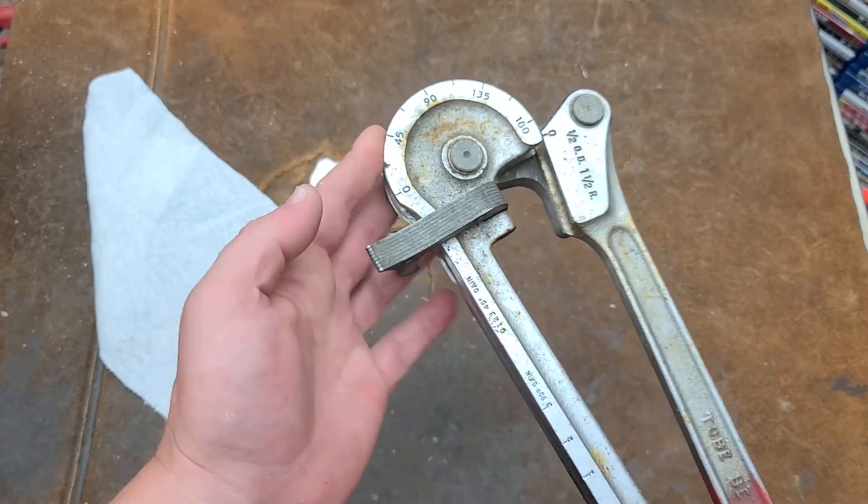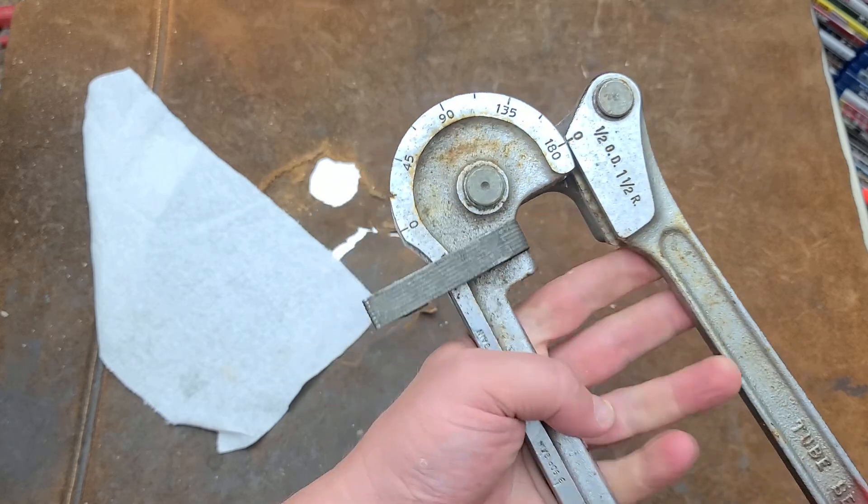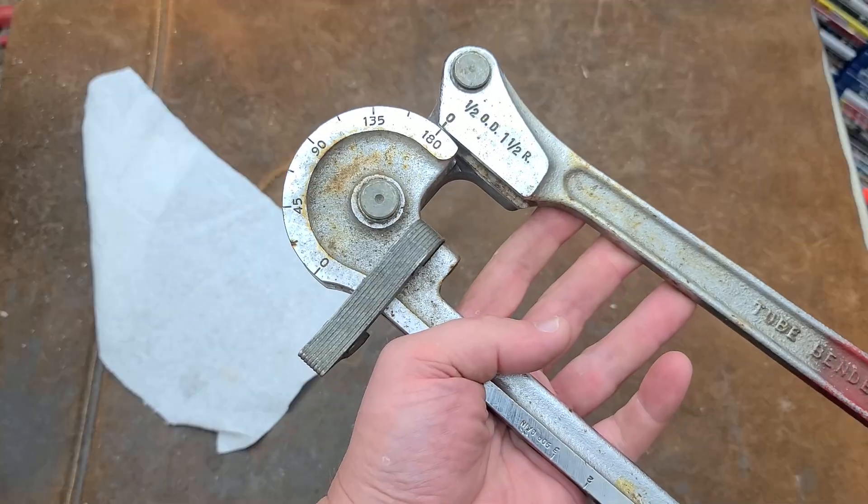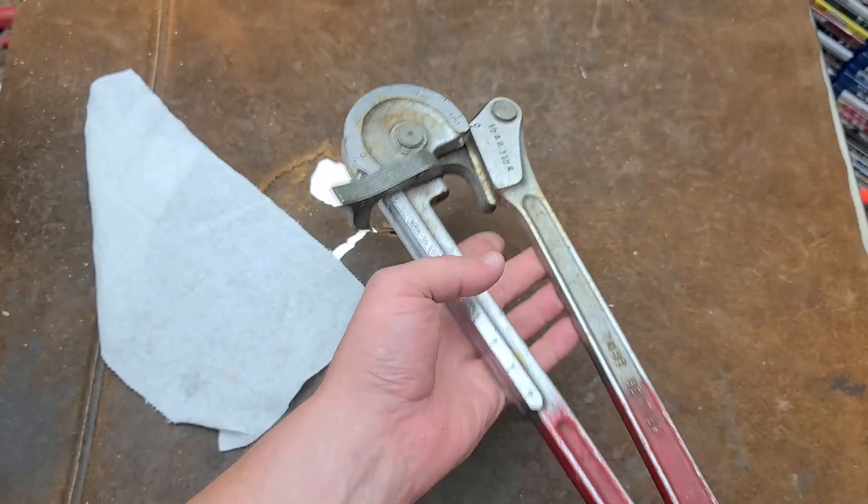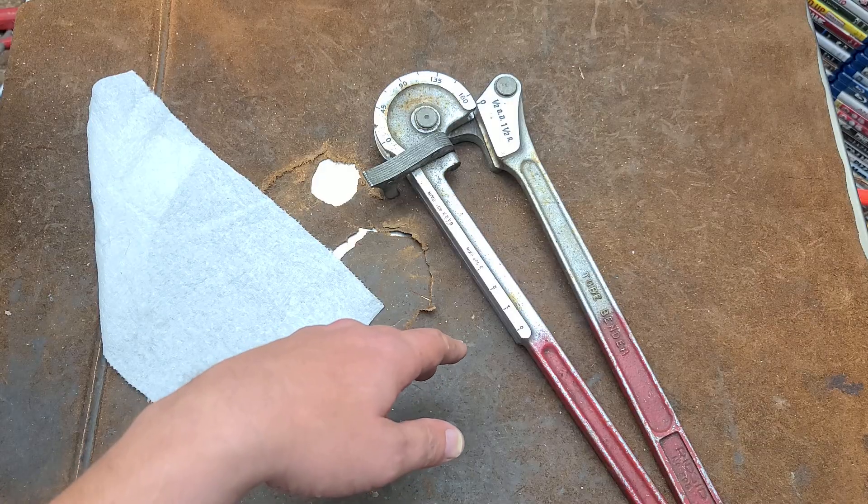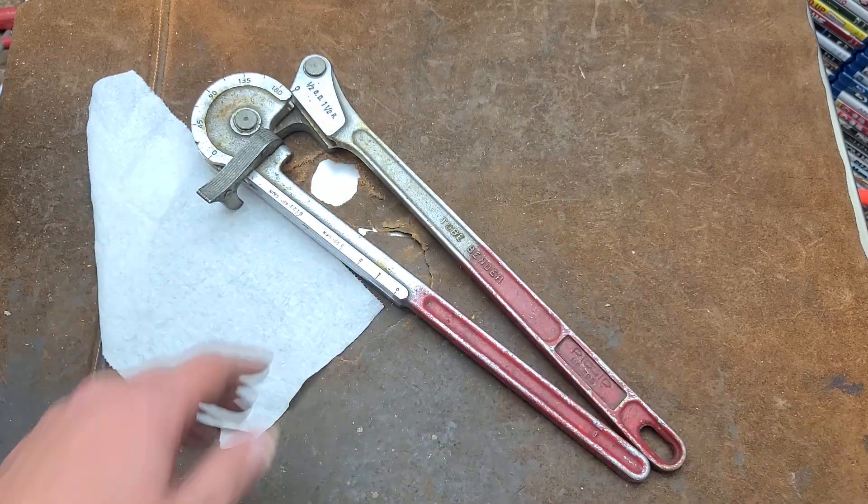Obviously these can be used on any material that it can physically bend. I wouldn't try bending rebar or solid steel rod, but you can certainly bend aluminum tubing or even half-inch stainless steel tubing. They're almost predominantly used for copper tubing. Really appreciate everybody who's been watching, see you next time.